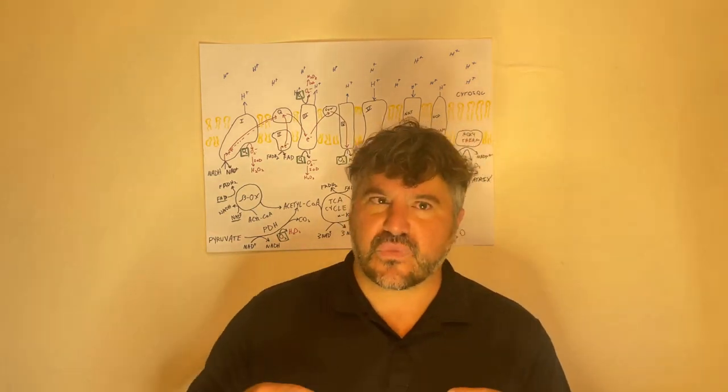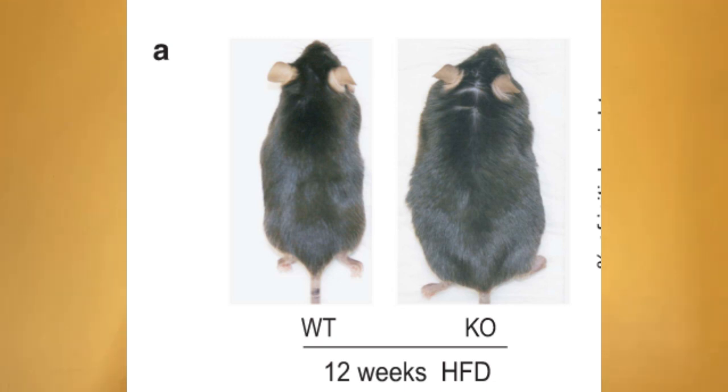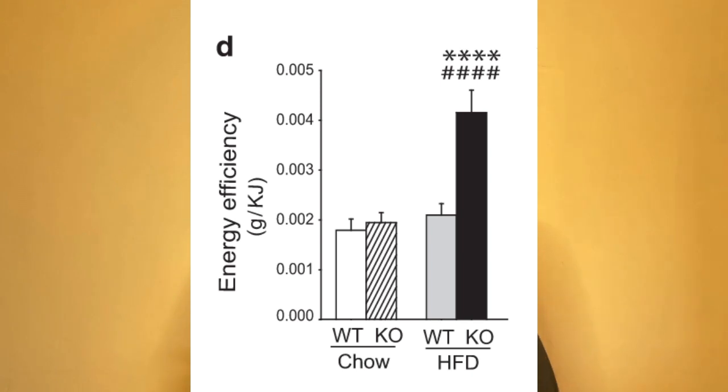In this study they took mice and they deleted, they knocked out NOX4. So they took away the relief valve. These mice have no ability to just simply blow off extra electrons, and what happens is they get very, very fat indeed. You can see those mice on the screen. These mice are on a high fat diet, a type of laboratory high fat diet which consistently makes mice very fat. But if they don't have that relief valve, they get much, much fatter.